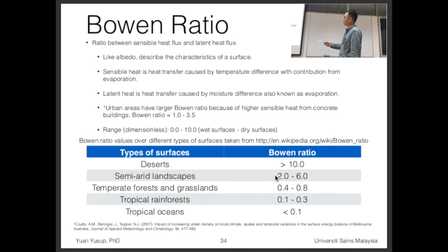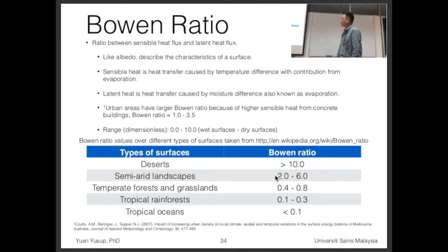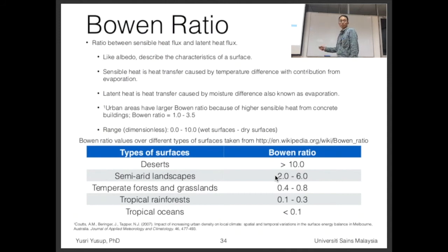Urban areas have larger Bowen ratio because of the higher sensible heat from concrete buildings. In Malaysia, we generally have lower Bowen ratio because of the high humidity and because vegetation releases moisture into the air through transpiration and respiration. Over dry areas like Dubai, the Bowen ratio will be quite low. The range of Bowen ratio is dimensionless — from zero for wet surfaces with high water content, to 10 for dry surfaces with very low or no water content.